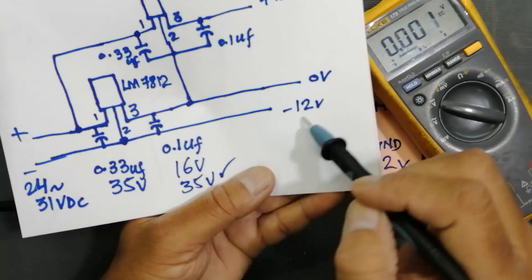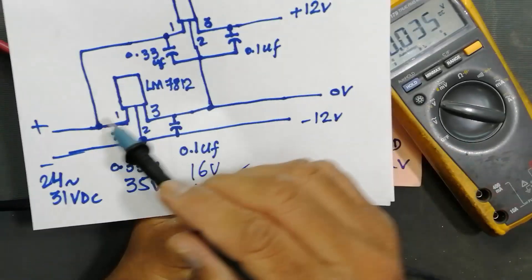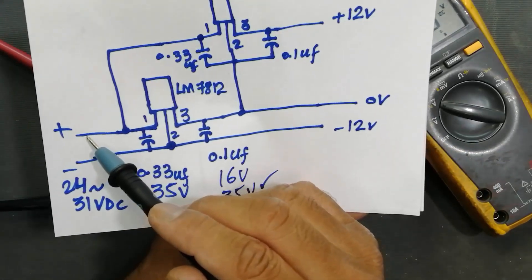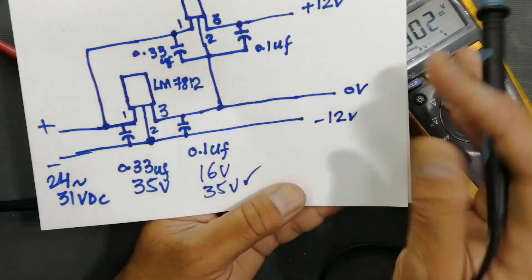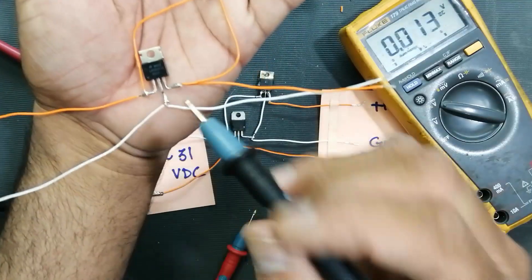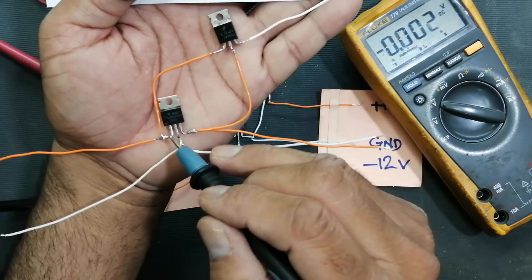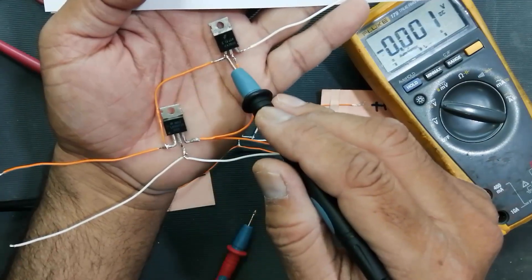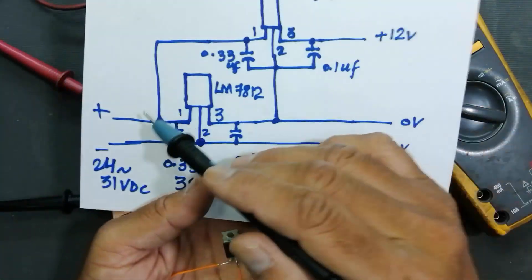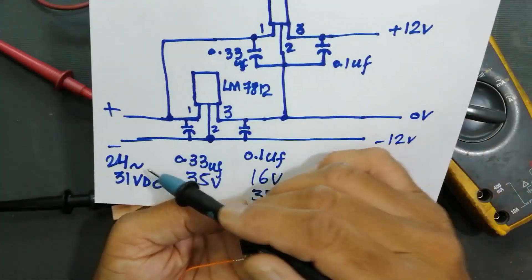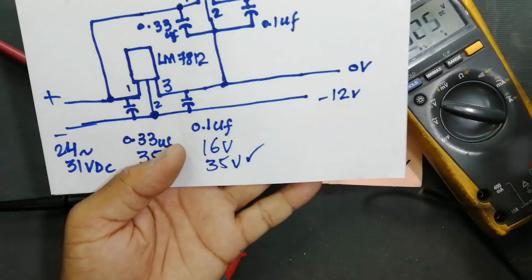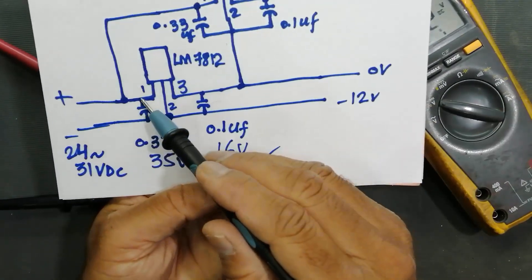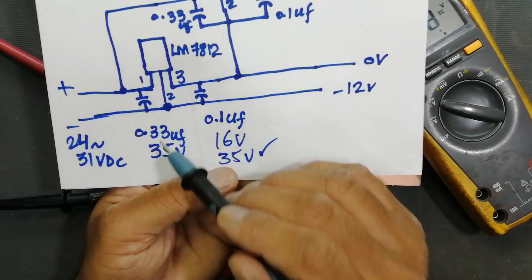7805 you will take 5 volts. Positive voltage will come at this point, pin number one. Here we have pin number one, so positive voltage will reach pin number one and the second IC pin number one. So both ICs will take 24 to 31 volts at pin number one and we must have to connect a capacitor.